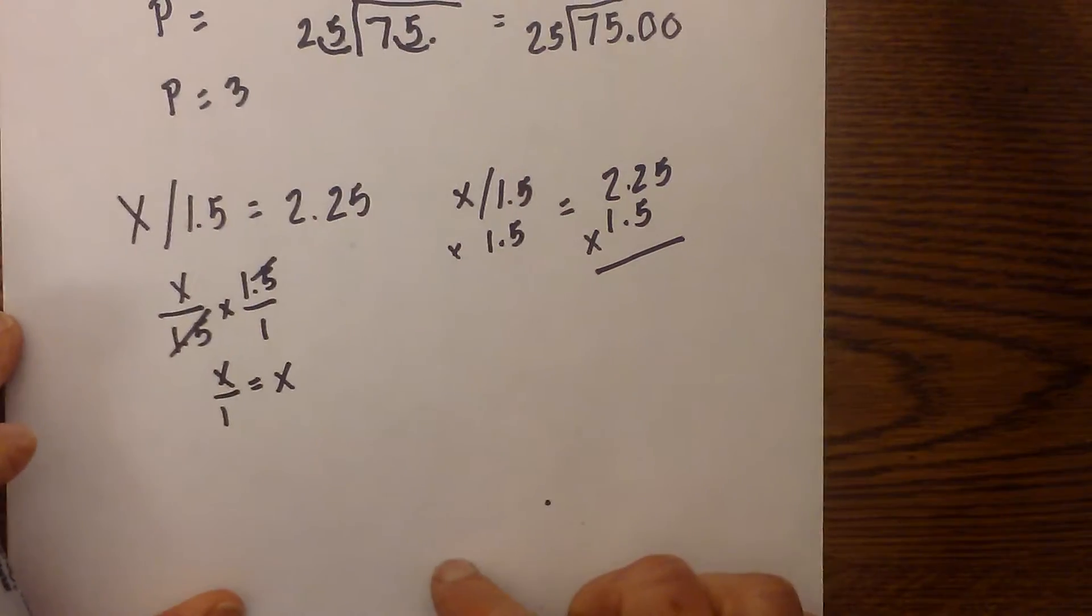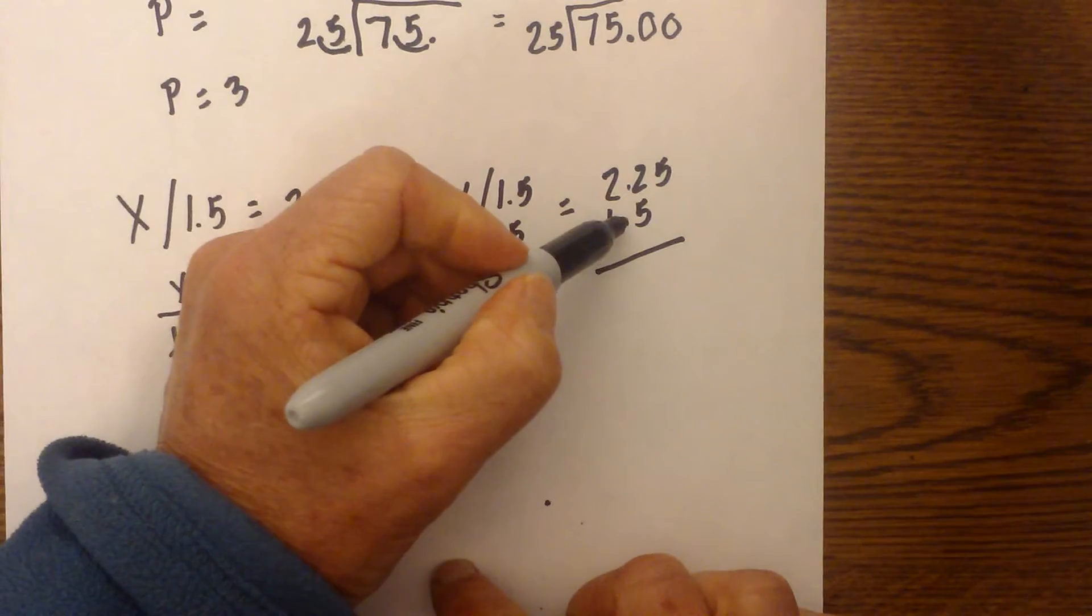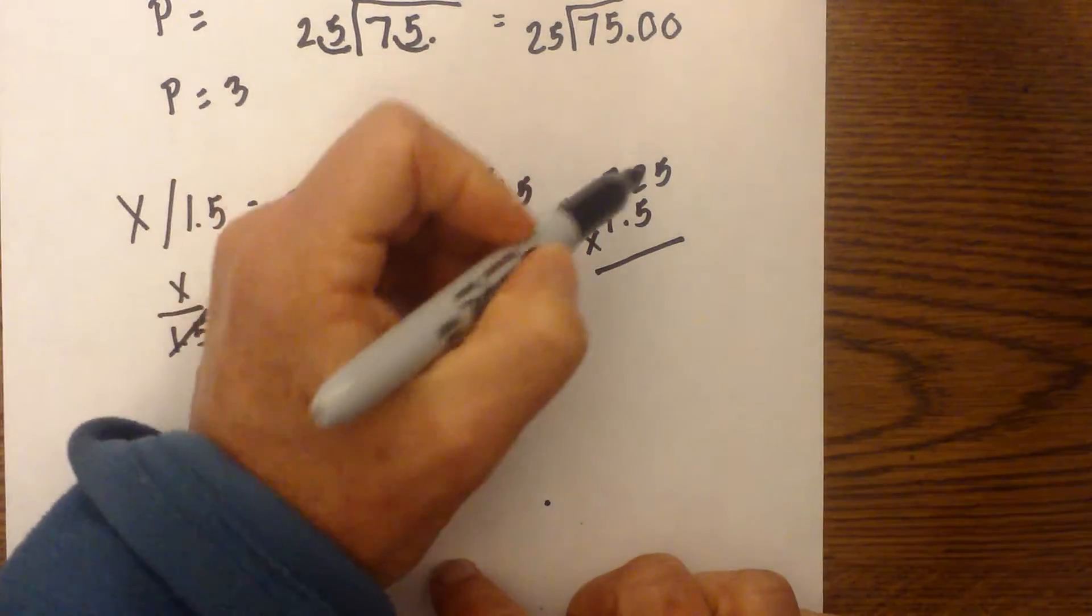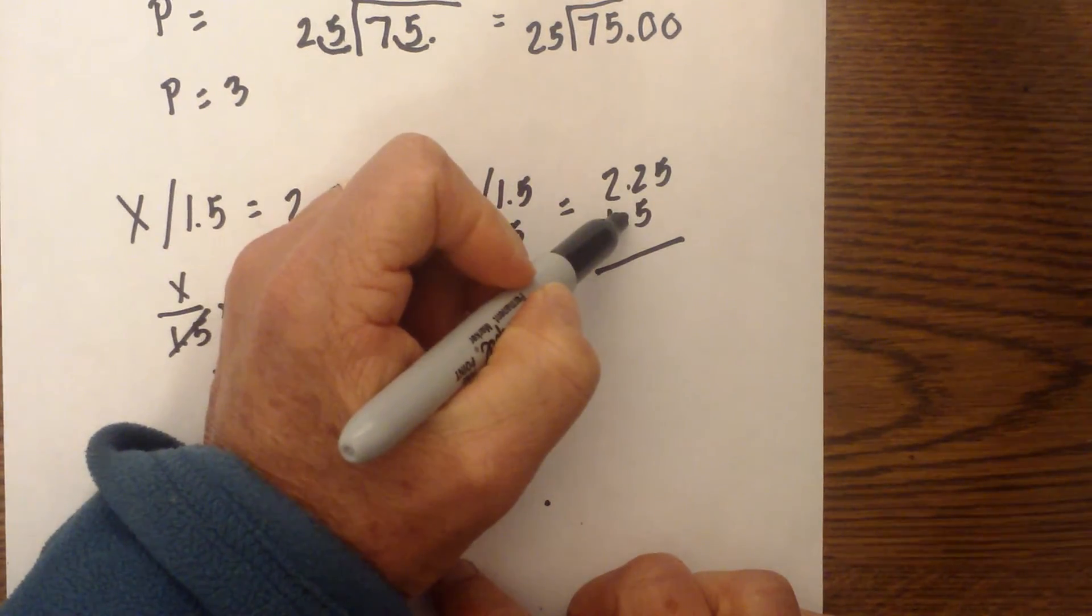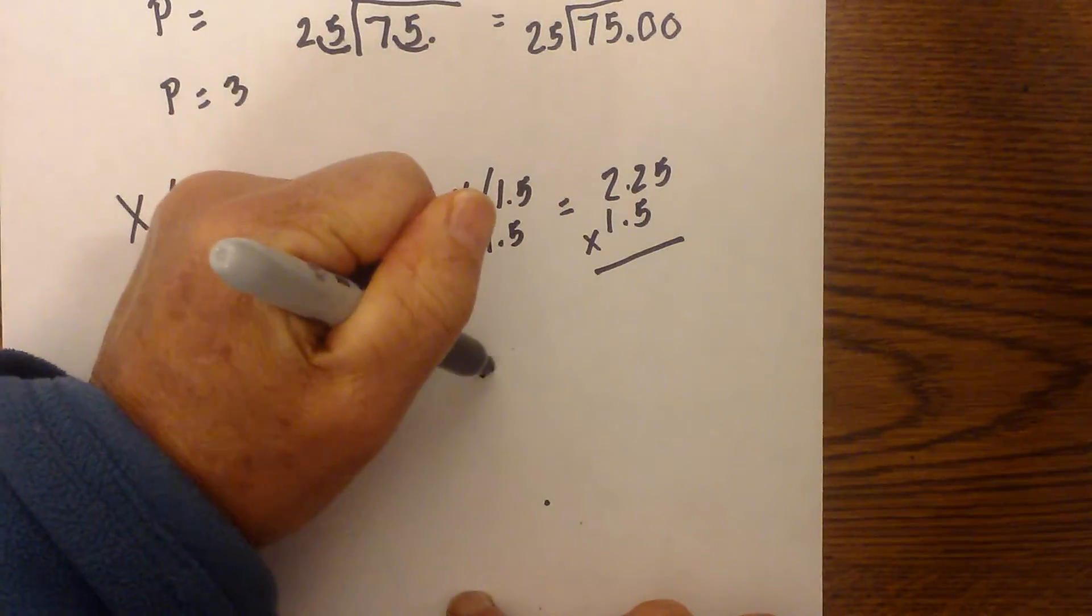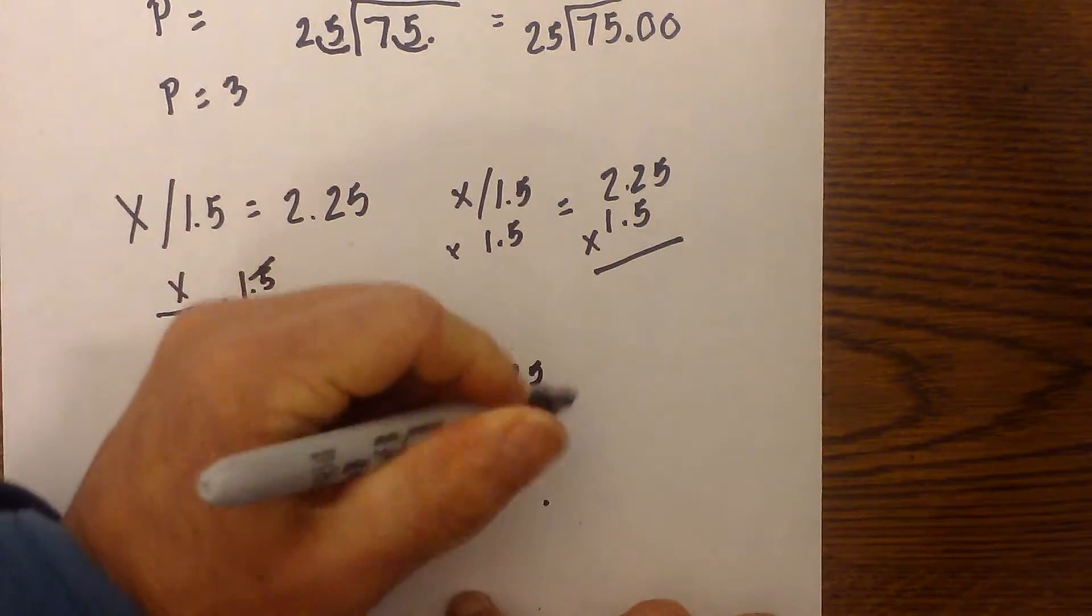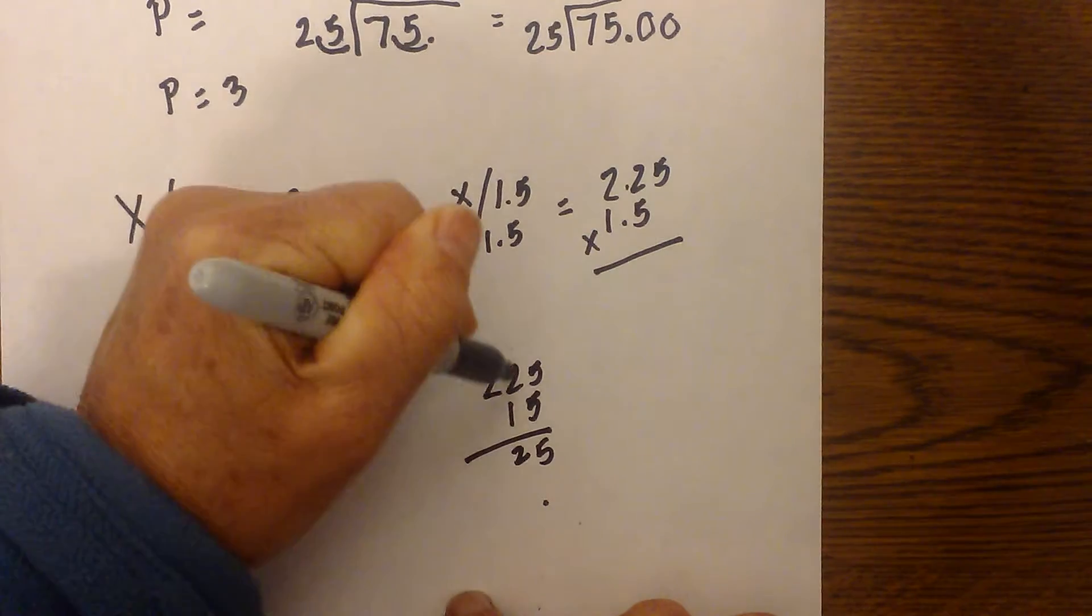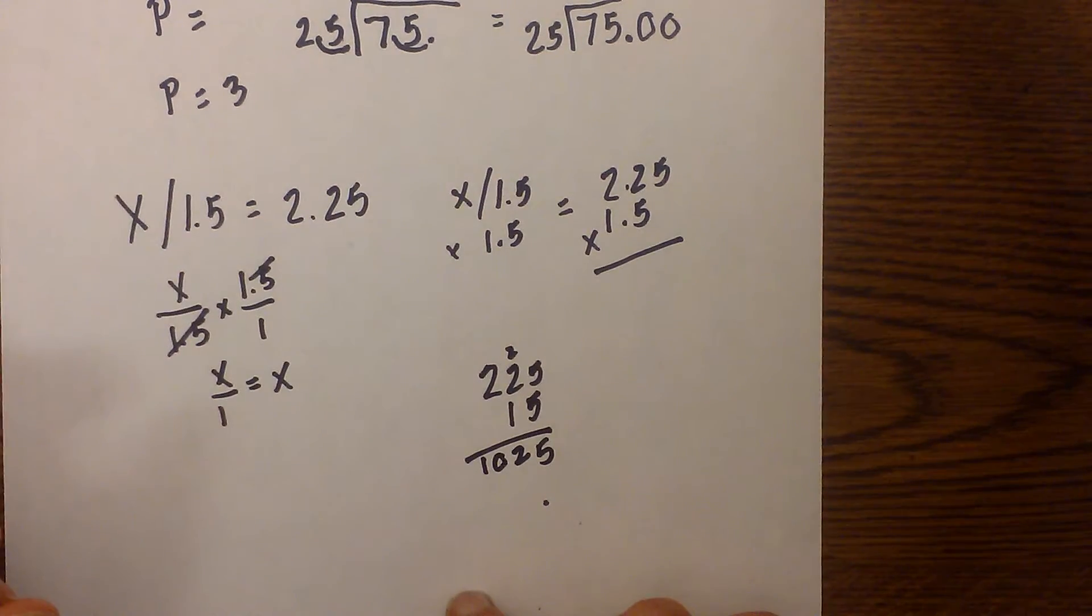So we have x divided by 1.5 times 1.5 to undo this is equal to 2.25 times 1.5. And so the easiest way, I think, to multiply is just act like you do not have any decimals. And then add the decimals back in at the end. And so if you count, I have 1, 2, 3 numbers to the right of the decimal. So I need to keep that in my answer. So then I just go 225 times 15. And that is 25. That is 10. That is 12 because I had to carry the 2. And that is 10.25.